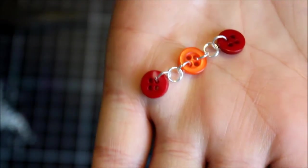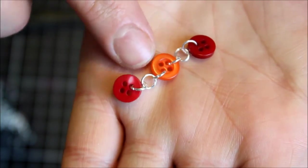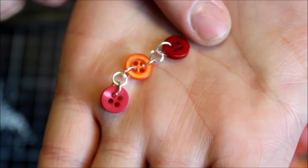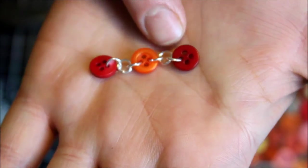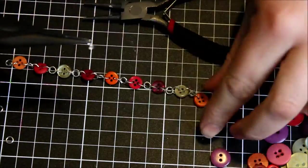The next one I would hook through the hoop and then the next one would connect through that spare hoop and into my second button so that they all connect this way. So in between each button there are three links.